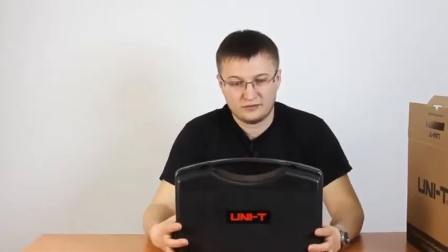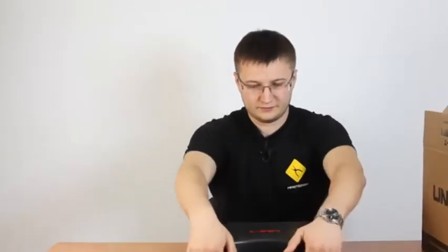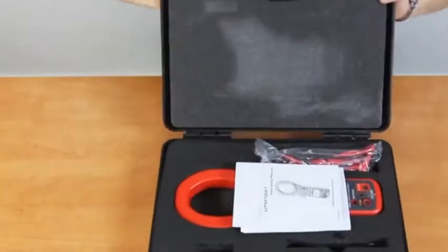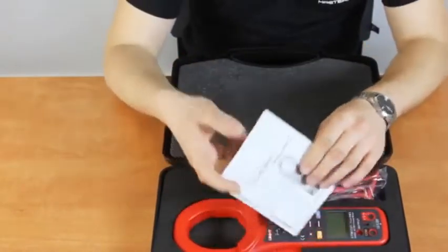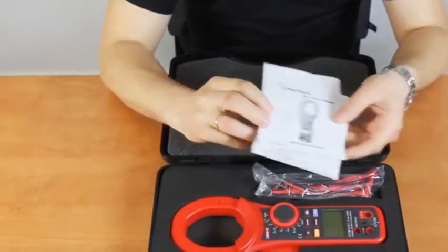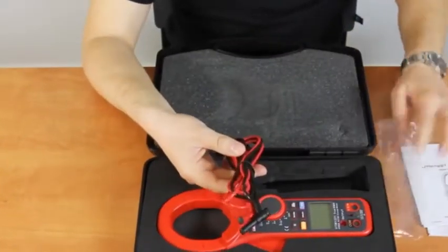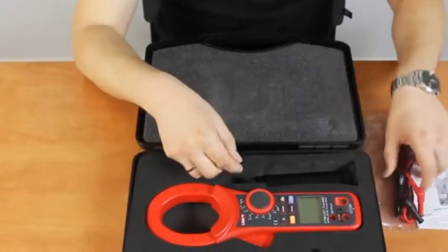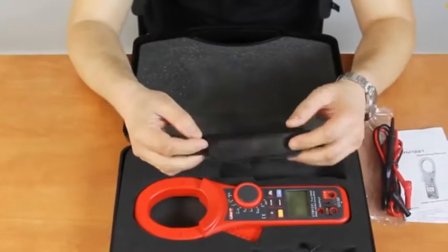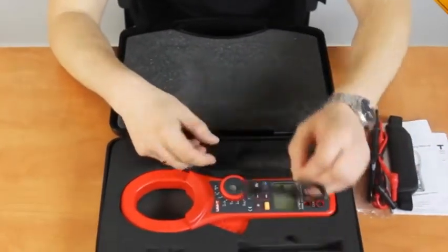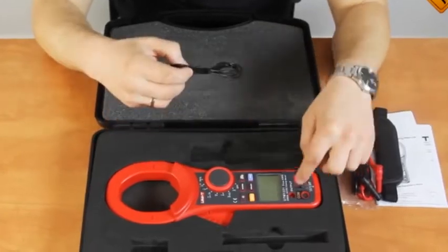The device is provided in a durable plastic case. Let's look inside. The package includes a user manual, measuring probes, a hand strap, a special signal cable for the analog output, and the meter itself.